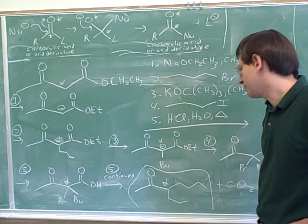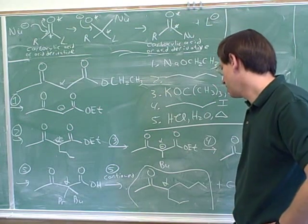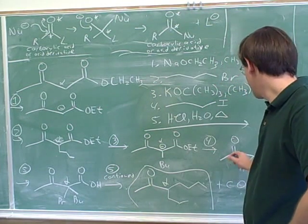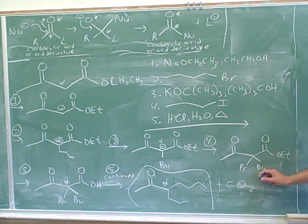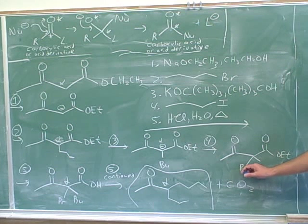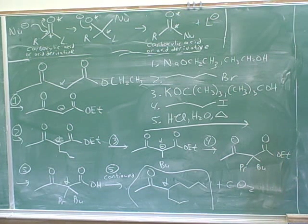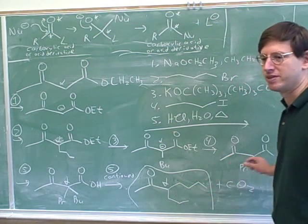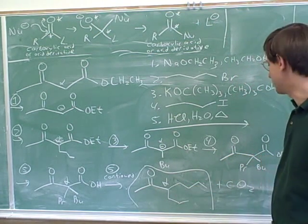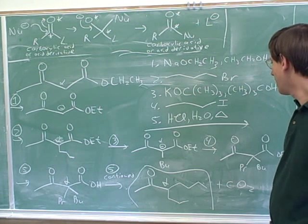Step four is another SN2 reaction. Notice some tricks you can use to save space using abbreviations — ethyl, butyl, propyl. Using these abbreviations also makes you less likely to add or drop carbons, so it's a good notational trick. In the middle of the reaction it saves time to use those abbreviations.